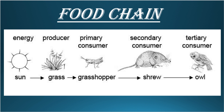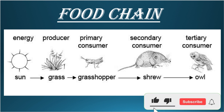The producer, like grass or any plant, is eaten by the first consumer, called the primary consumer. The primary consumer is then eaten by the secondary consumer. That secondary consumer is eaten by another organism called the tertiary consumer. For example, the producer gets energy from the sun and makes food, which is eaten by a grasshopper — the primary consumer. The grasshopper is eaten by a shrew — the secondary consumer. The shrew is eaten by an owl — the tertiary consumer. In this way, all living organisms get energy.